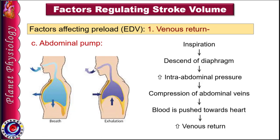The mechanism of the abdominal pump is as follows. During inspiration, as the diaphragm descends, intra-abdominal pressure rises. This causes compression of abdominal veins and pushes blood towards the heart, increasing venous return. Both thoracic and abdominal pumps work simultaneously during respiration, causing venous return to increase during inspiration and decrease during expiration.